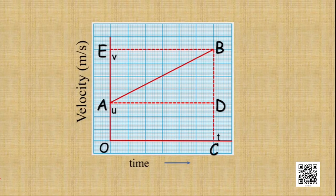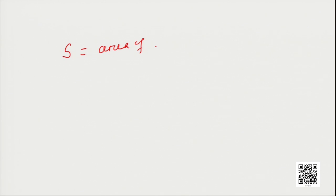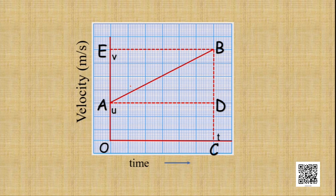The distance traveled by the object S equals the area of the trapezium OABC. The area of OABC can be divided into two parts: the area of rectangle OADC and the area of triangle ADB. We will take the sum of these two areas to find out the distance traveled. Let us call the rectangle area S1 and the triangle area S2.